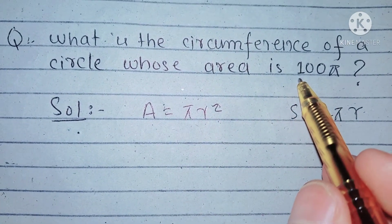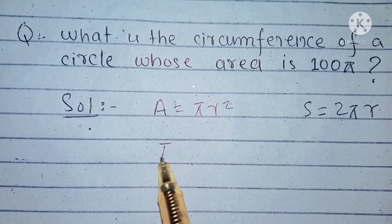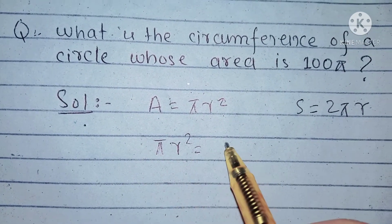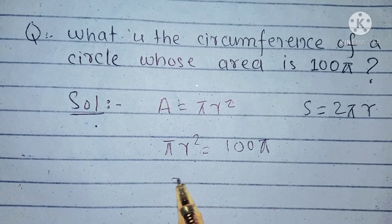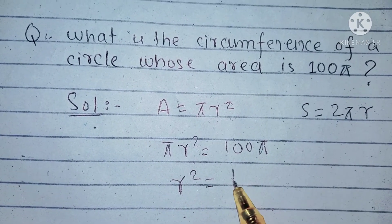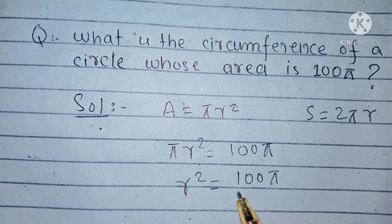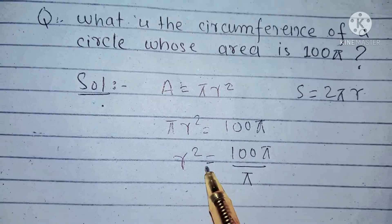it means that πr² equals 100π because area is equal to 100π. And we can find r as r² equals 100π divided by π, dividing both sides by π.